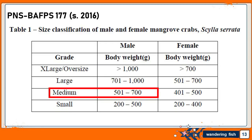The size classification for male and female mangrove crab Scylla serrata is different. According to Philippine National Standard set by Bureau of Agricultural and Fisheries Products Standard No. 177, an individual male crab weighing more than 1,000 grams is considered extra-large or oversize, while it is more than 700 grams for female. Males weighing 701–1,000 grams and females 501–700 grams are large. Medium crabs weigh 501–700 grams for male and 401–500 grams for female. Small crabs weigh 200–500 grams for males and 200–400 grams for females.